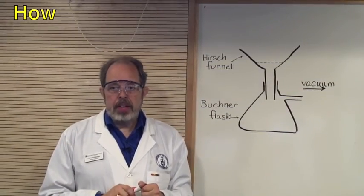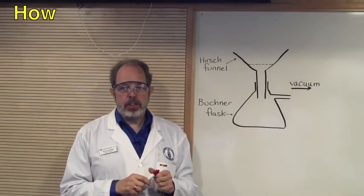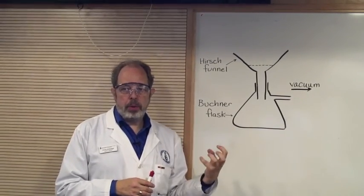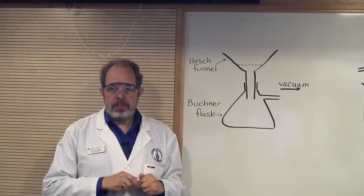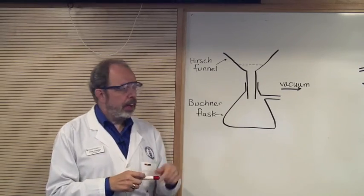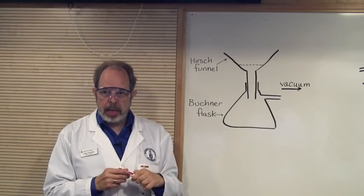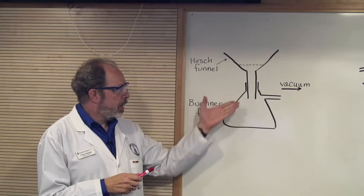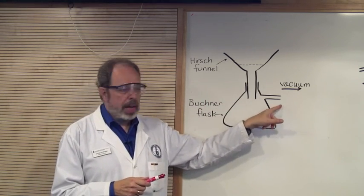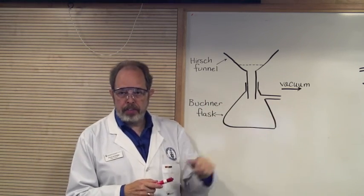Moving to the whiteboard here, there are several methods of filtering. Suction filtration allows separation with suction, pulling the liquid through the filter which is part of a Hirsch funnel. The funnel sits in a Buchner flask which is a flask with a sidearm and the vacuum gets pulled off here.